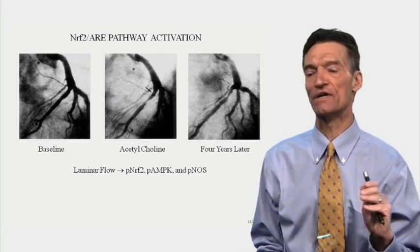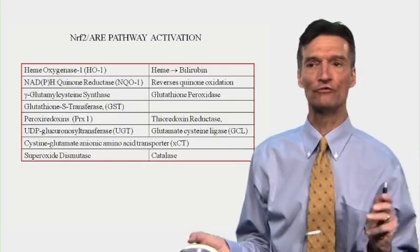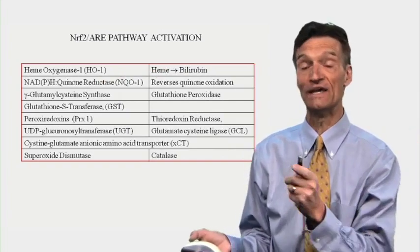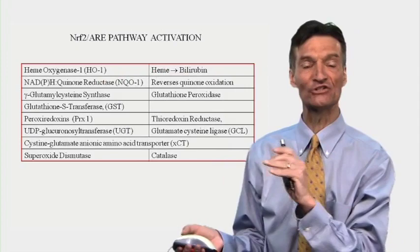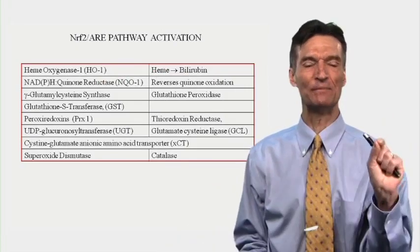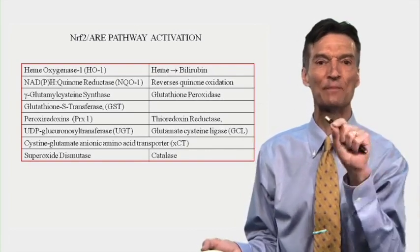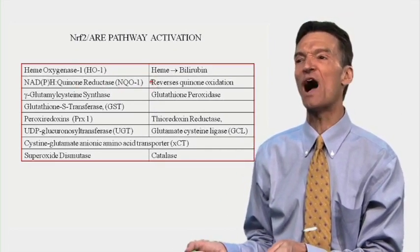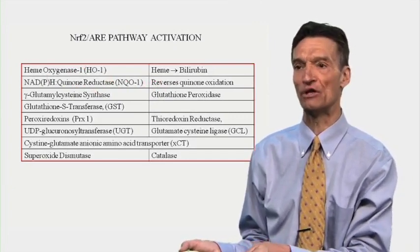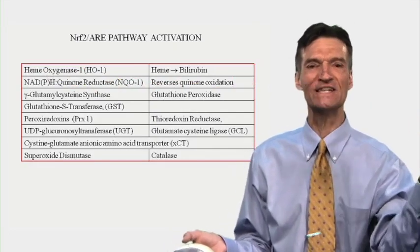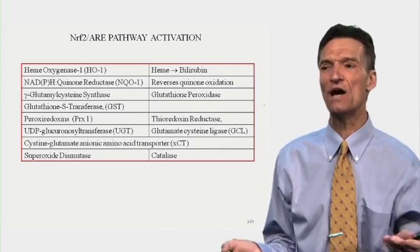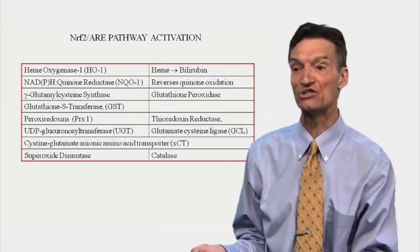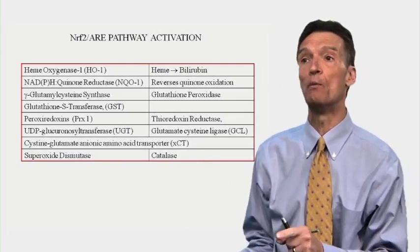Laminar flow activates Nrf2, nitric oxide synthase, and AMPK. When we activate Nrf2, we make heme oxygenase-1, which converts heme — a component of hemoglobin — into bilirubin. Bilirubin acts as an antioxidant, and heme oxygenase-1 specifically inhibits IκB kinase, keeping NF-κB from translocating to the nucleus. NADPH quinone reductase (NQO1) blocks quinone oxidation — a final common pathway antioxidant. The enzymes recycling glutathione, periredoxins, thioredoxins, phase 2 detox enzymes, superoxide dismutase, and catalase are all upregulated with Nrf2 translocation.